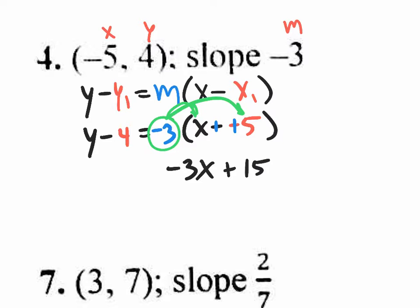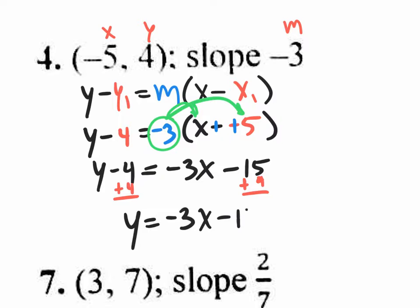So we have negative 3x minus 15, we have the equal sign, we have y, we have minus 4. It's almost in slope-intercept form. All you have to do is get rid of that minus 4, adding 4 there, adding 4 over here. So your slope-intercept form equation is y equals negative 3x minus 11.